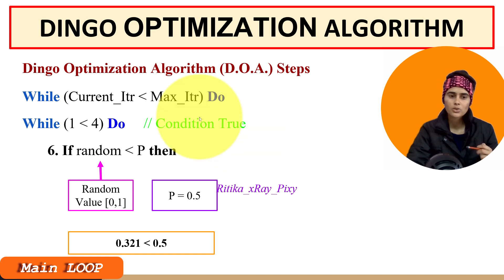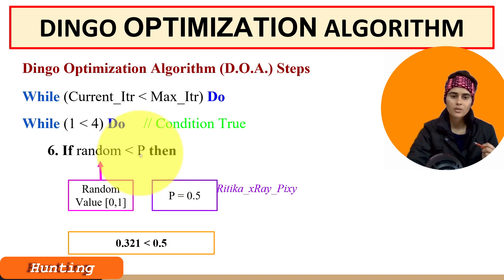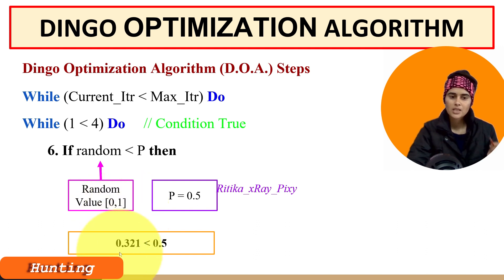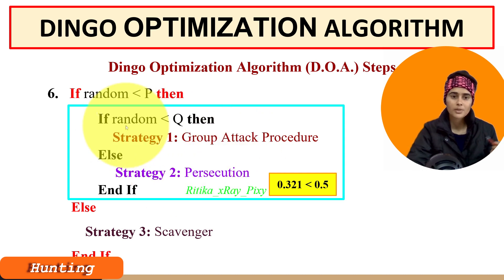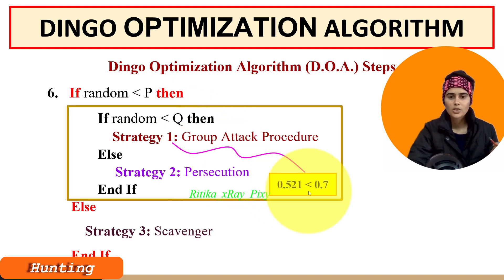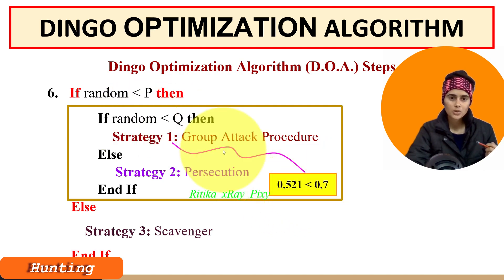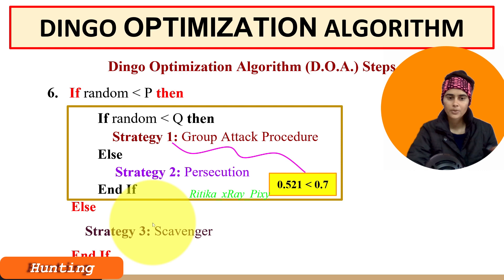We check the probability of hunting: p = 0.5, and suppose random = 0.321, so the condition is true — they are doing hunting. Next we check whether they are doing group hunting or individual hunt using q = 0.7. Suppose random = 0.521, which is less than q, so the condition is true — we apply strategy one, meaning they are doing a group attack.